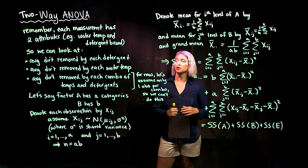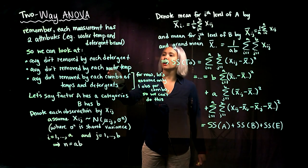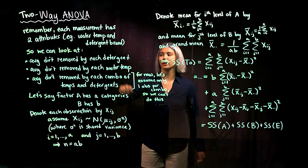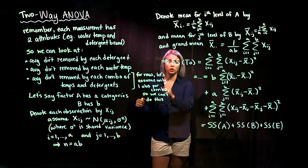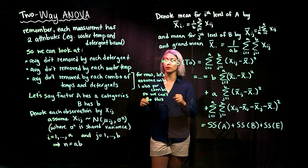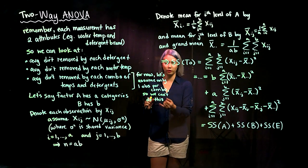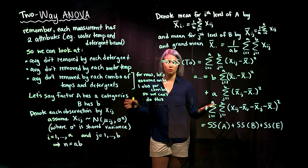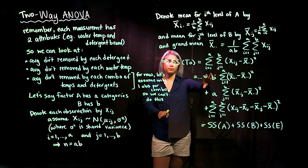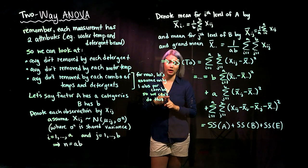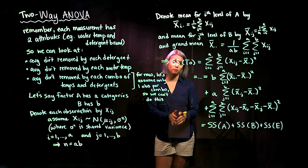We could look at the average dirt removed by each detergent by averaging over the different water temperatures, or we could average over the different detergents to look at the average amount of dirt removed by each water temperature. If we have more than one observation per water-temp/detergent combo, we can take the average for each combo. But for now, we'll start with one observation per combo, so we won't be able to answer that third question quite yet.